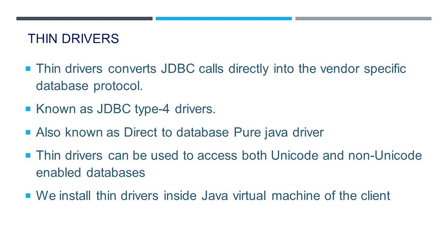Thin drivers can be used to access both Unicode and non-Unicode-enabled databases. Internally, Java applications use UTF-16 Unicode encoding for string data. When fetching data, the Type 4 JDBC driver automatically performs the conversion from the character encoding used by the database to UTF-16. Similarly, when inserting or updating data, the driver automatically converts UTF-16 encoding to the character encoding used by the database. Thin drivers are also popularly known as the direct-to-database pure Java driver. They are portable and the fastest among all JDBC drivers, and are normally installed inside the Java Virtual Machine of the client.